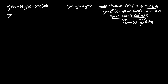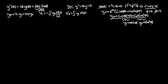The particular solution equals v1 y1 plus v2 y2. We'll use the Wronskian approach, where v1 equals the negative integral of y2 times f of t over the Wronskian, where f of t is the right-hand side. And v2 equals the integral of y1 times f of t over the Wronskian. You just have to memorize these two formulas.